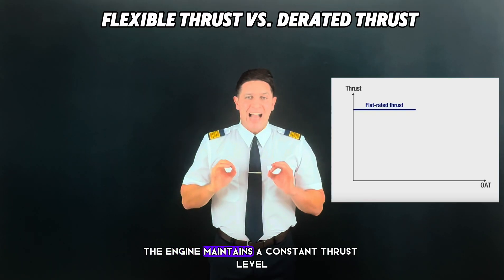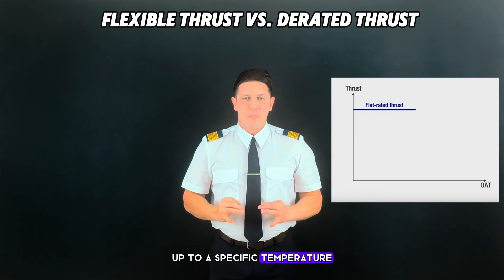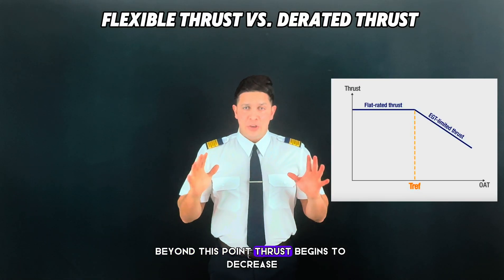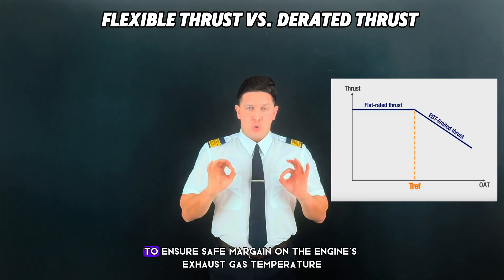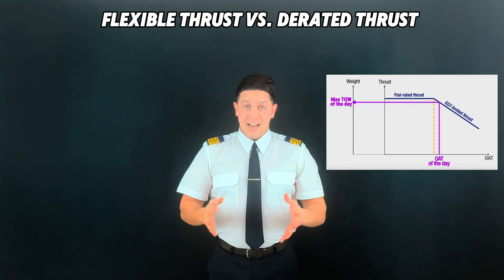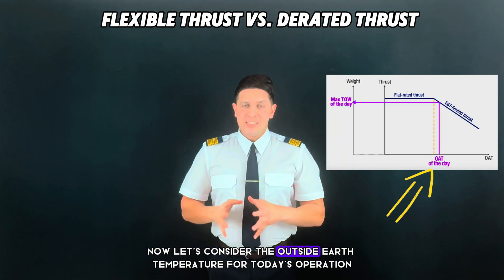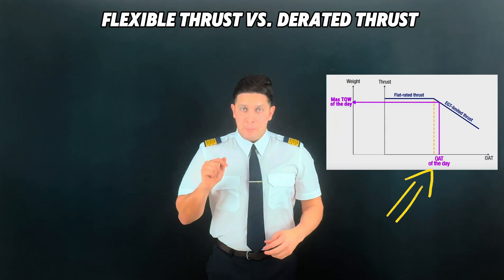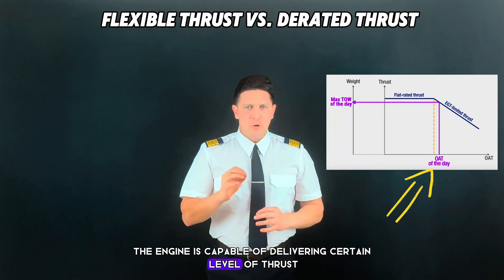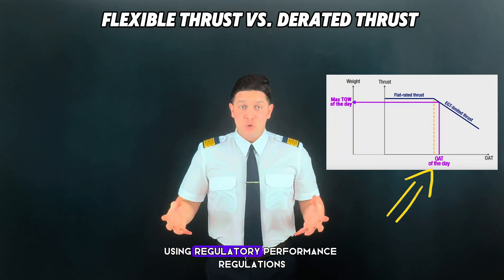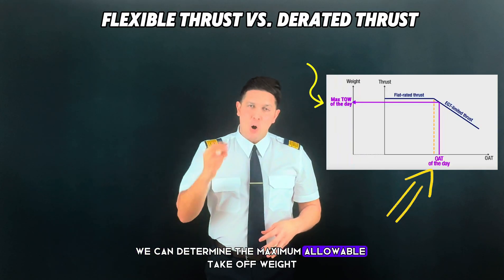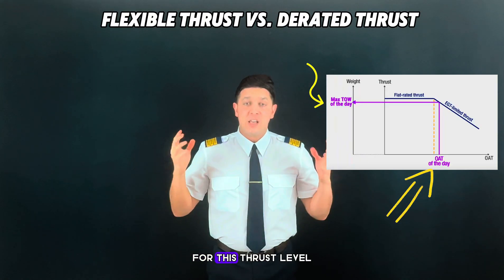The engine maintains a constant thrust level up to a specific temperature called T-Ref. Beyond this point, thrust begins to decrease to ensure a safe margin on the engine's exhaust gas temperature. Now, considering the outside air temperature for today's operation, the engine is capable of delivering a certain level of thrust. Using regulatory performance regulations, we can determine the maximum allowable takeoff weight for this thrust level.